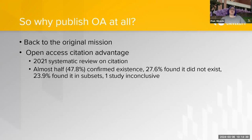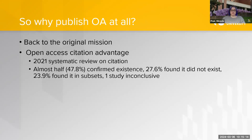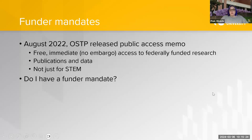So why publish open access at all? We can return to the original mission — it is good to share information with everyone who should be able to access it. There's also an open access citation advantage. A 2021 systematic review found that almost half of studies showed a citation advantage for OA, about a quarter found no advantage, and another quarter found it varies by discipline. Overall, if more people can read your work, more people will cite it.